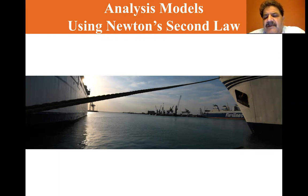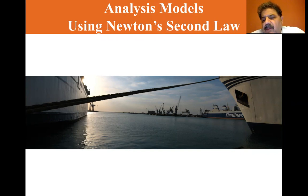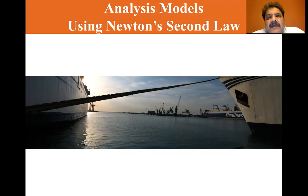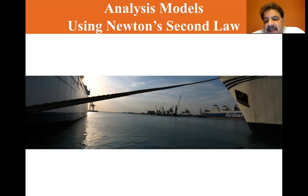We usually neglect the mass of any rope, strings, or cables involved. We assume the magnitude of force exerted by any element of rope on an adjacent element is the same for all elements along the rope. Words such as 'light' or 'negligible mass' means ignore the mass. When a rope is attached to an object and pulls on it, the rope exerts a force on the object in the direction away from the object, parallel to the rope. The magnitude T of that force is the tension in the rope, and it's a scalar quantity.